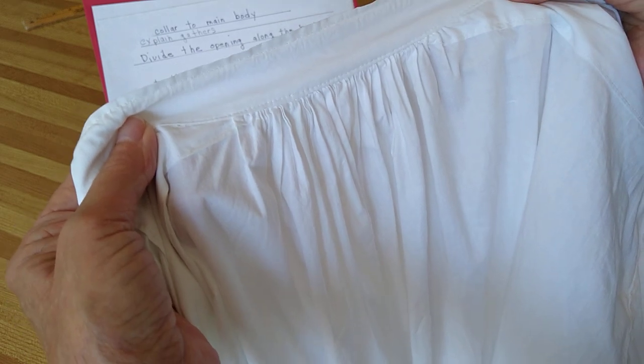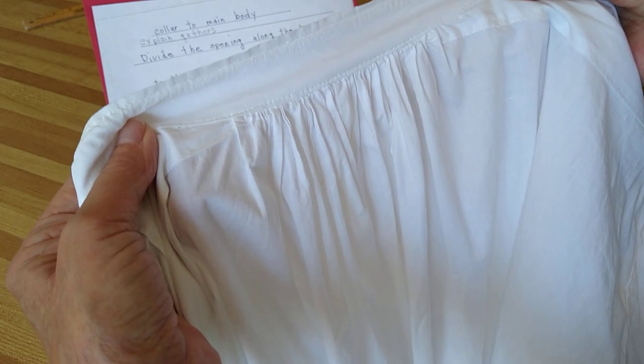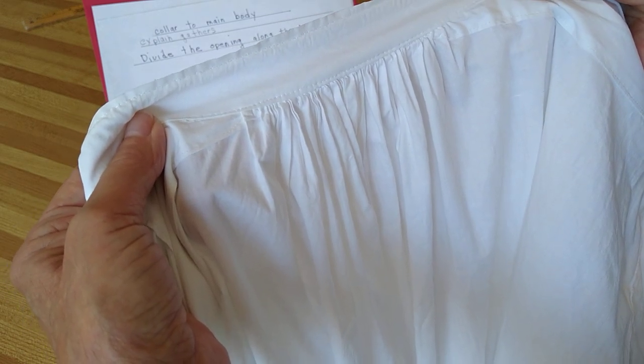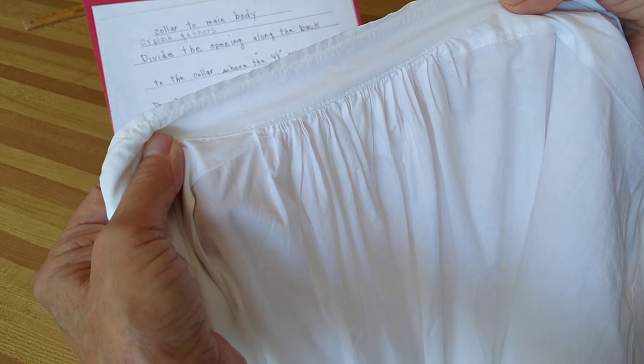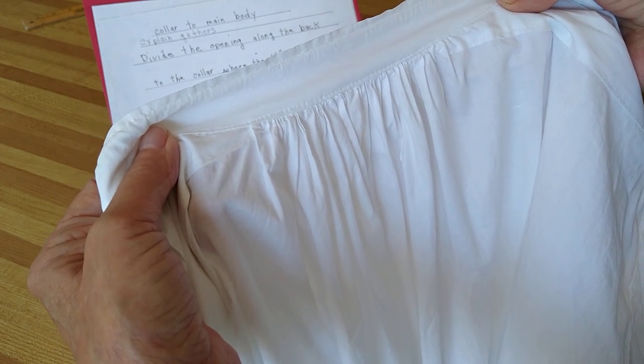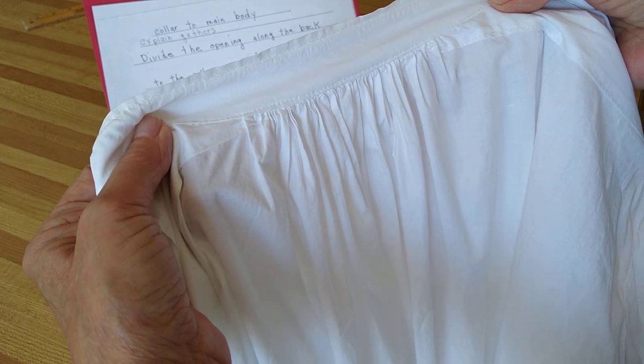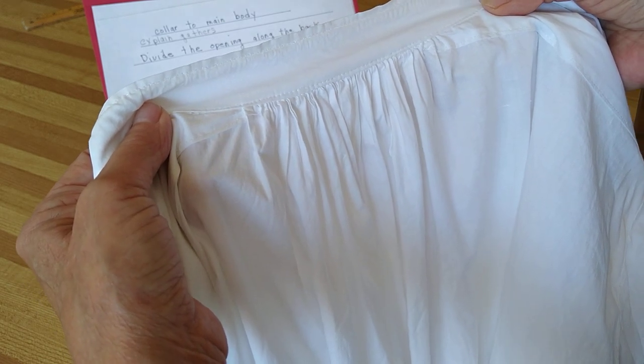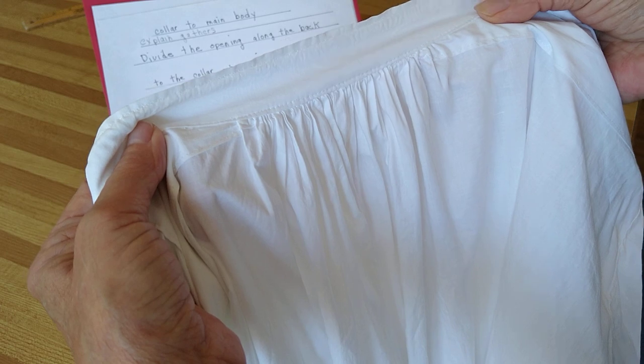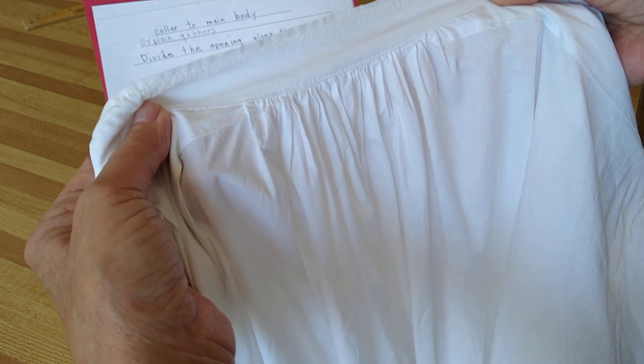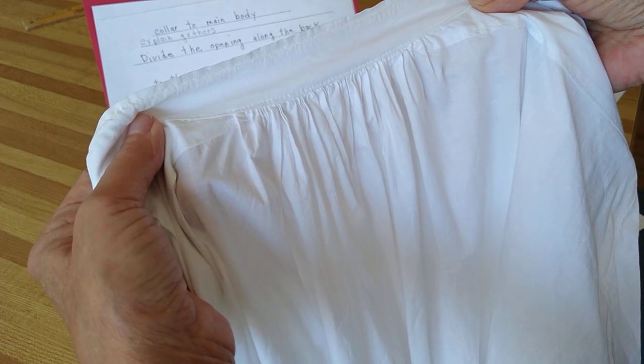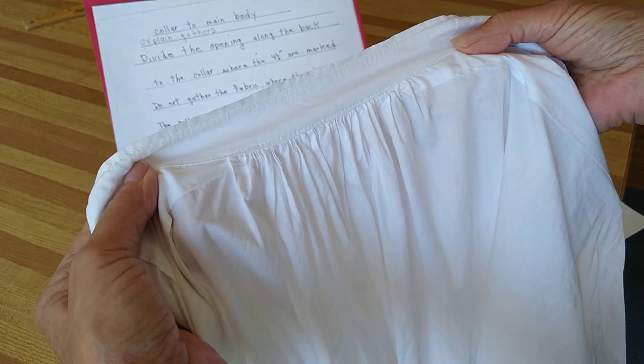Remember the gathering stitch is the bottom stitch, that's the one you're going to pull. You're not going to pull the top stitch because you're going to have to do it all over. It's going to lock it up. I just keep dividing the main body of the back and keep dividing it up until I can fit it into those in between those two spaces.